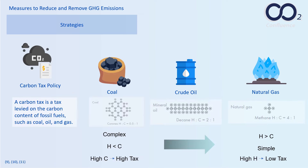A carbon tax directly sets a price on carbon by defining a tax rate on greenhouse gas emissions or, more commonly, on the carbon content of fossil fuels. It is different from an emissions trading system in that the emission reduction outcome of a carbon tax is not predefined, but the carbon price is.